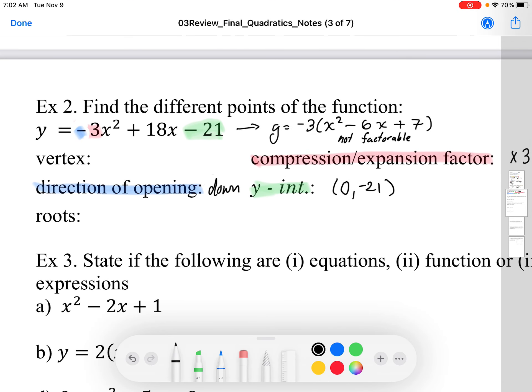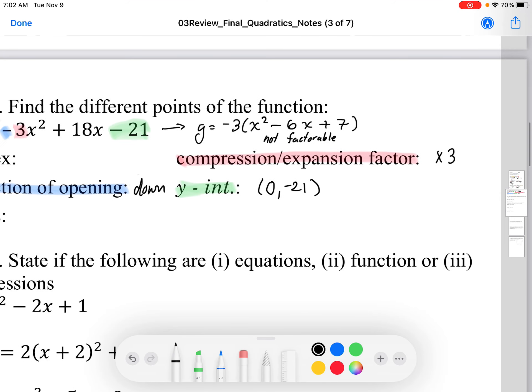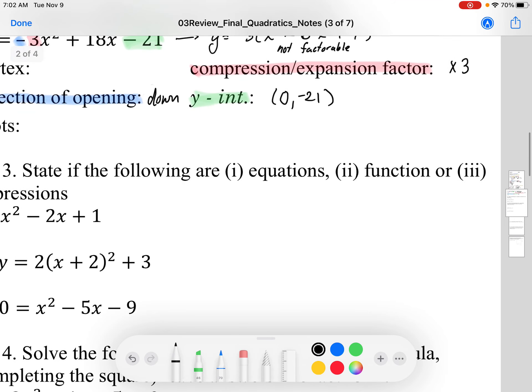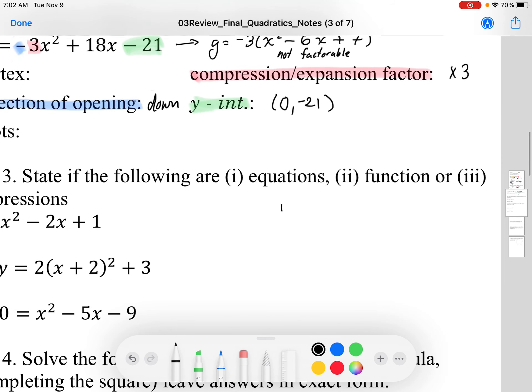Okay, so the vertex, I'm going to have to find a little bit of space to do this. The vertex we're going to find by putting into, by completing the square. So I'm going to factor out the -3.